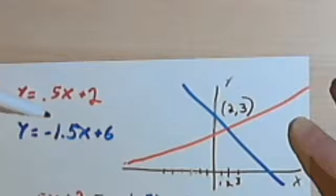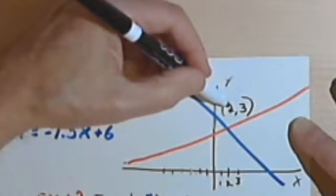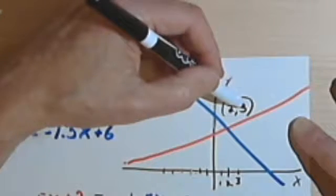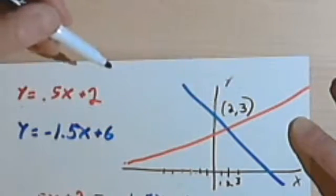So the solution to this system would be x equals 2, that's the first coordinate, and y equals 3, the second half of the coordinate pair.